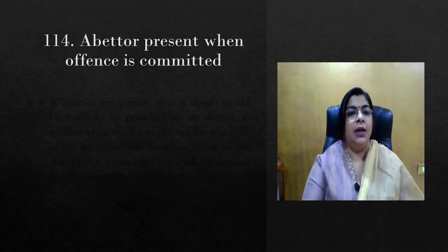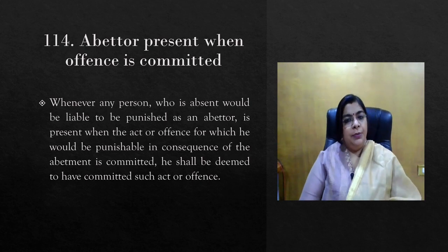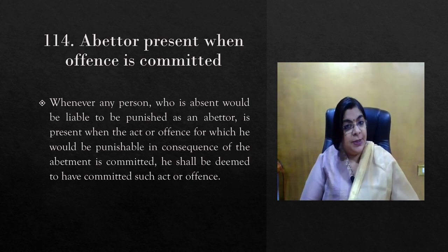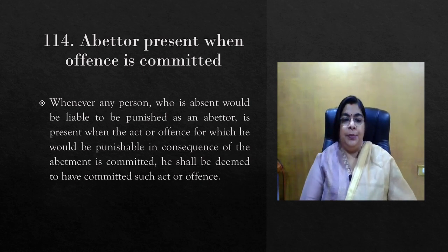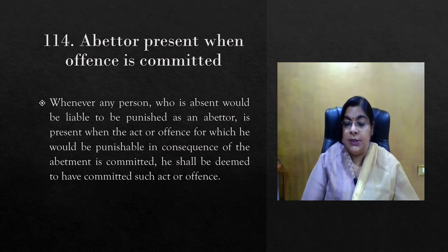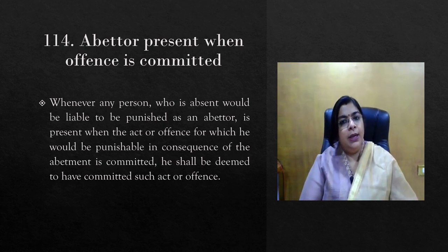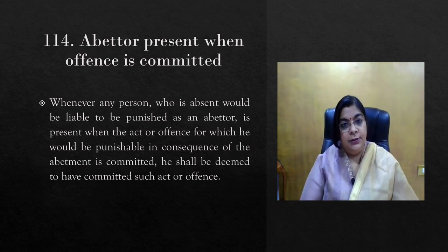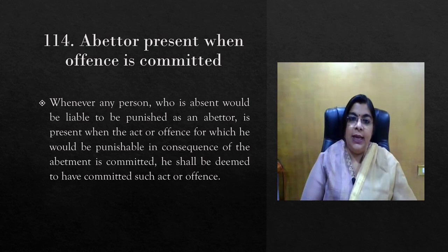Section 114 speaks about the abettor present when the offense is committed. In the previous sections it is described that it is not at all necessary for the person who is abetting to be present where the act has been committed as a consequence of the abetment. But if by any chance the abettor is present at that moment, and the offense is being committed, and the abettor is continuously instigating, guiding, provoking, or doing a continuous job of abetment at the time of the commencement of the act, then he is definitely liable for the act which has been committed by the other person through his continuous guidance or instigation.